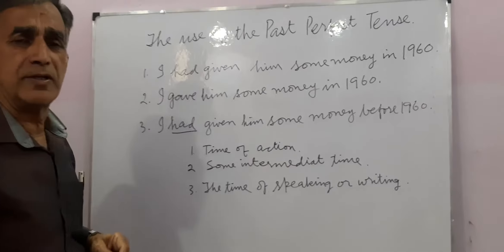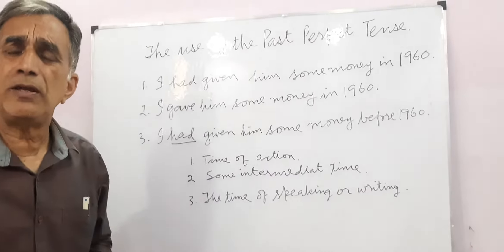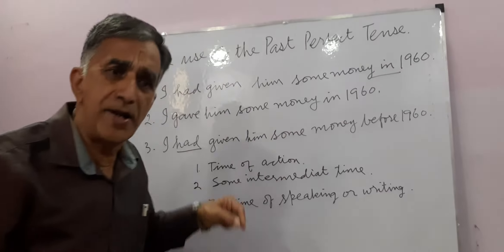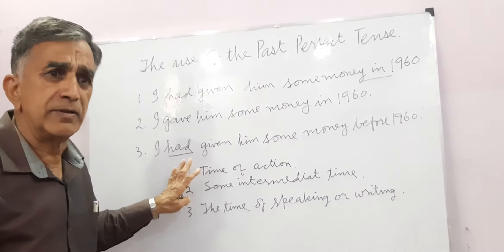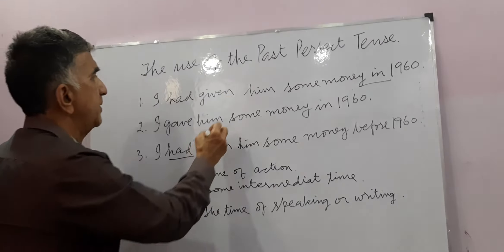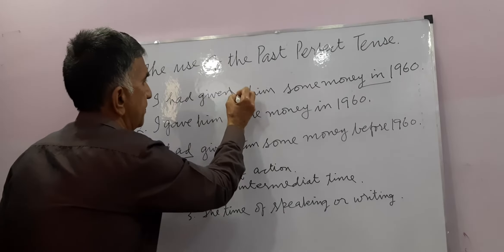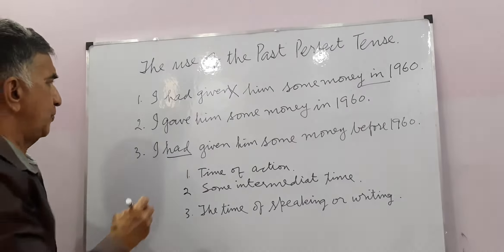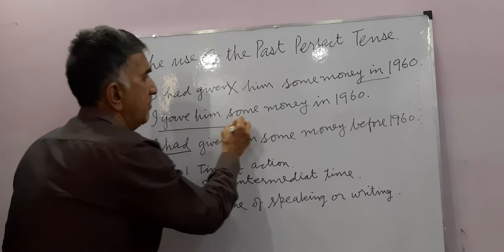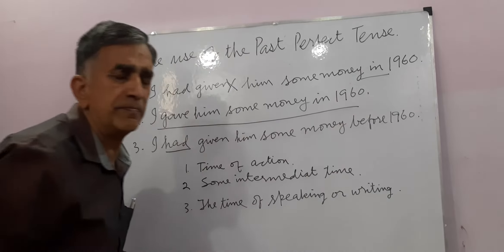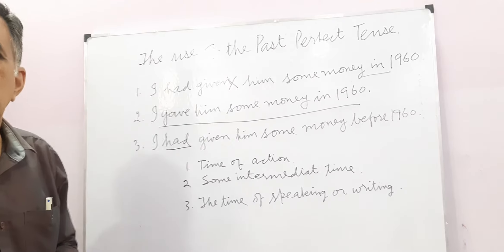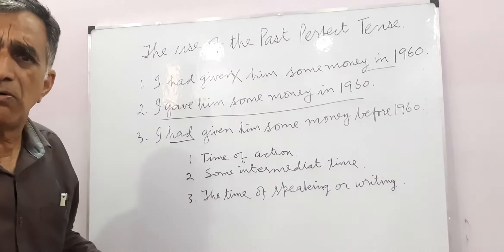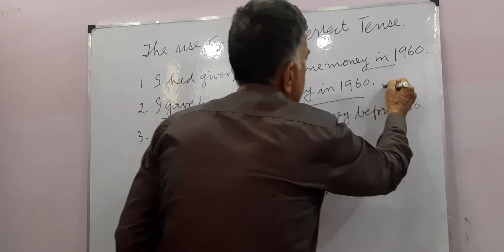Now in the first sentence, there are only two times — 1960 and now when I am writing. So this sentence is not correct. Number two: I gave him some money in 1960. There are only two times: time of action and now. So this is correct.